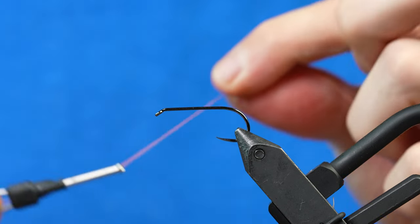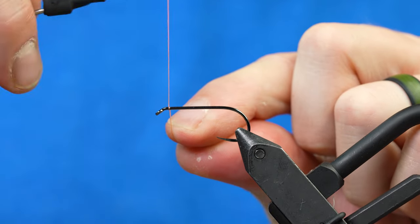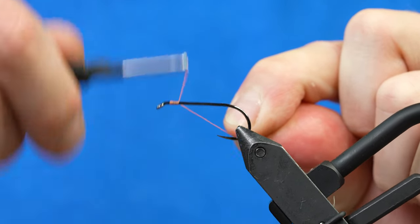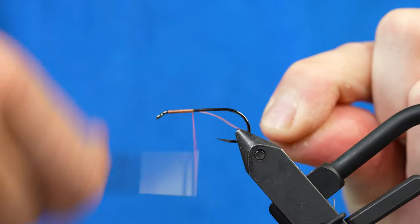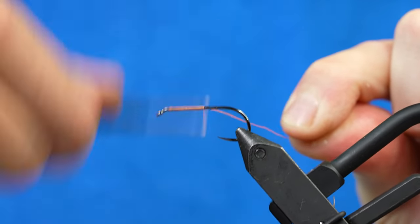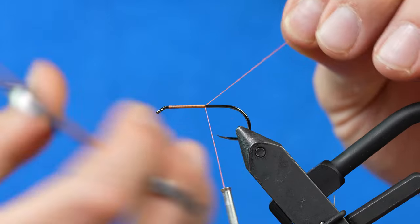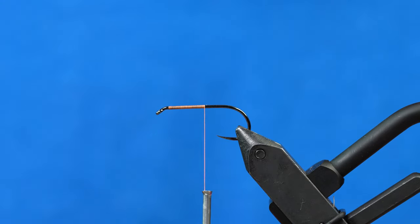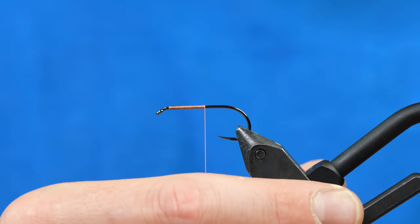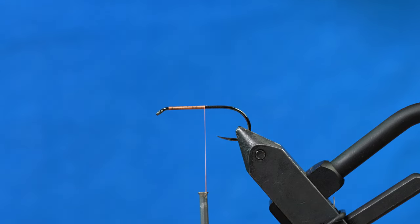We'll start with a Umpqua 680 streamer hook in a size six. I like these guys. They're a little bit more of a stinger bend to it, real grabby hook, and a little heavy gauge so it kills the fly super well.